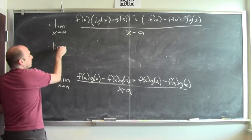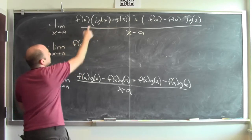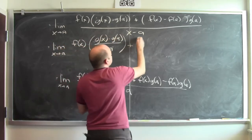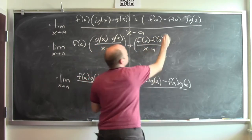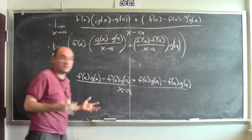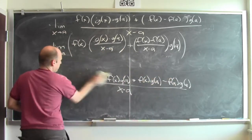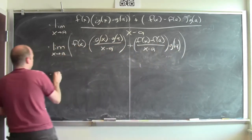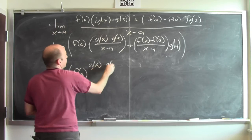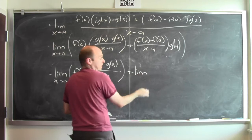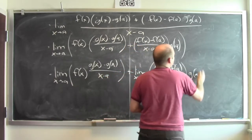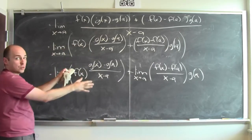This will be the limit as x goes to a of f of x times the quantity g of x minus g of a over x minus a, plus f of x minus f of a over x minus a times g of a. Now this is the limit of a sum, so it's the sum of the limits as long as the limits exist. I can rewrite this as the limit of the first term plus the limit of the second term.